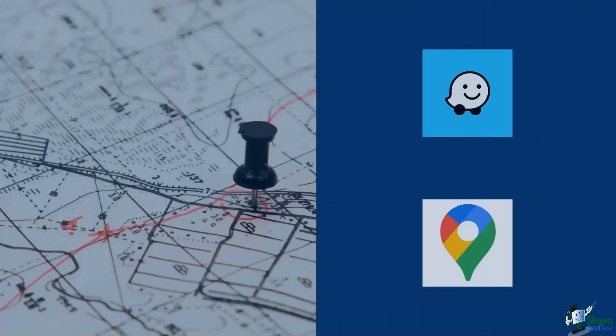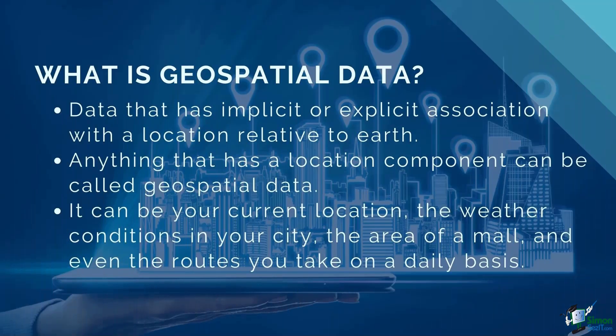Over the past few years, navigation apps like Waze and Google Maps have become widespread and very helpful to motorists. These apps inform a driver of the best possible route — the one taking the shortest amount of time while avoiding the heaviest traffic. These apps make good use of geospatial data analysis to track locations of drivers, roadblocks, and accidents, as well as weather conditions. According to Wikipedia, geographic data or geospatial data is data that has implicit or explicit association with a location relative to Earth. Anything that has a location component can be called geospatial data — your current location, weather conditions in your city, the area of a mall, or routes you take daily.